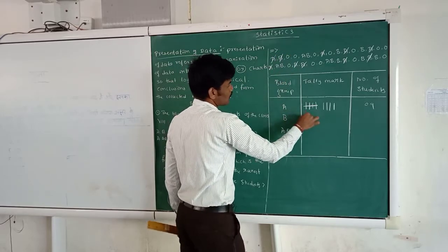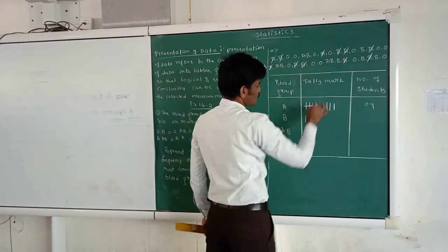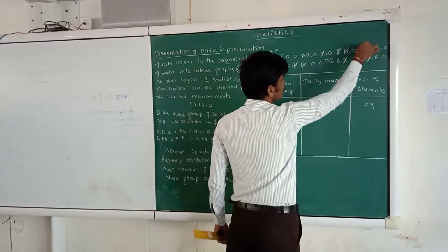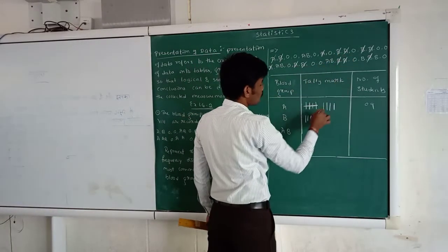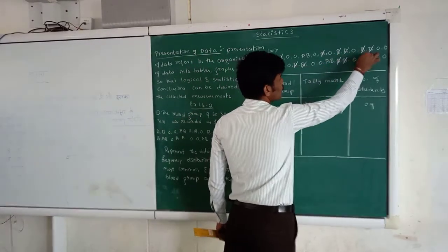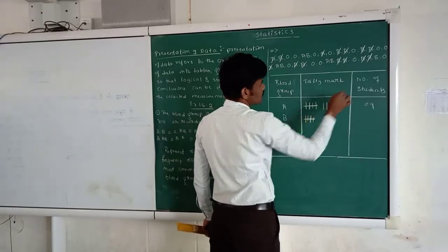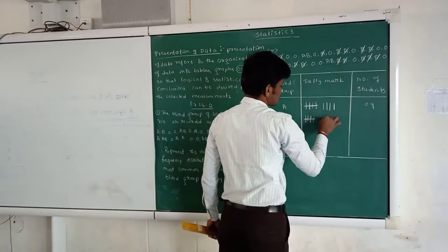Blood group B: one, one, two, two, three, three, four, four, five, five, six, six.